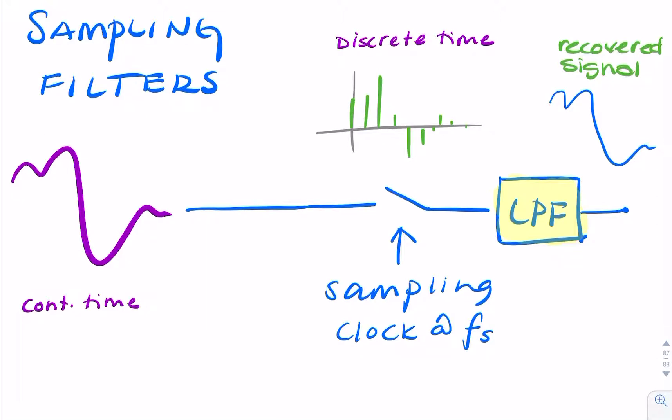so in other words, if we're unable to sample at twice the bandwidth of our signal, then sometimes what we need is another filter. So this additional filter would be to restrict the bandwidth of our original signal.